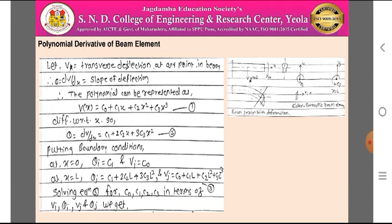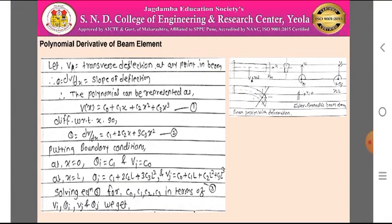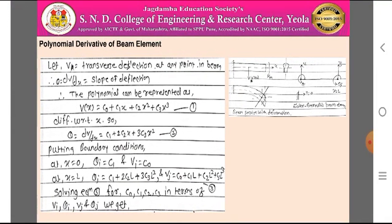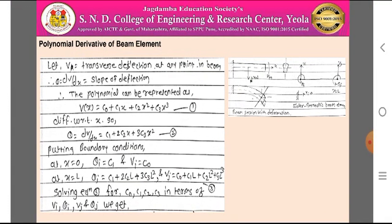Putting the boundary conditions: at x = 0, theta_i = C1 and V_i = C0. At x = L, theta_j = C1 + 2·C2·L + 3·C3·L², and V_j = C0 + C1·L + C2·L² + C3·L³. Solving these equations for C0, C1, C2, and C3 in terms of Vi, theta_i, Vj, and theta_j: